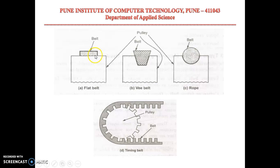Flat belts are used where a moderate amount of power is to be transmitted from one pulley to another, and when two pulleys are not more than eight meters apart. In the second case, we have a V-belt.